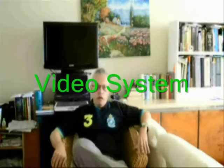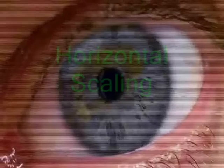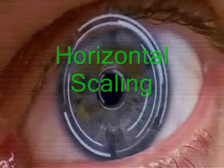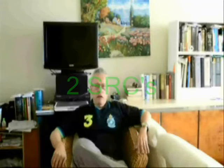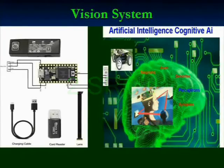The video system is composed of two sample rate converters, with one performing horizontal scaling and the second performing vertical scaling. The data passing through the two SRCs is dependent on the type of effect being produced.